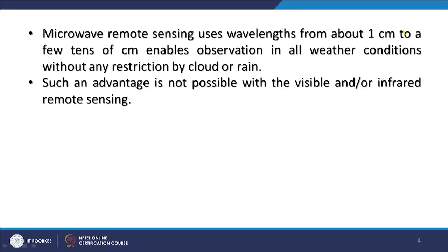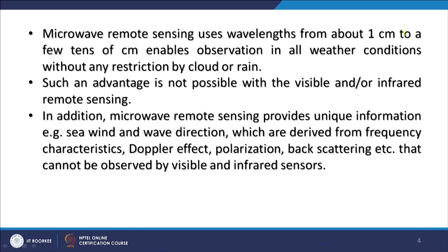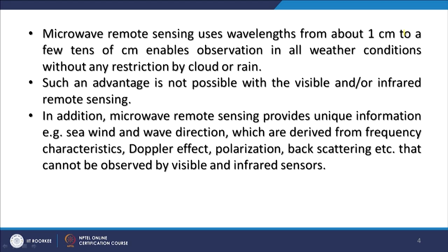Microwave remote sensing uses wavelengths of about 1 centimeter to a few tens of centimeters, which enables observations in all weather conditions without restriction by cloud or rain, because the size of the particles is smaller compared to the wavelengths. Therefore they do not put any hindrance to these waves — they can pass through clouds, rain, or fog. Such an advantage is not possible with visible or infrared, because those wavelengths are very small and water droplets create problems.